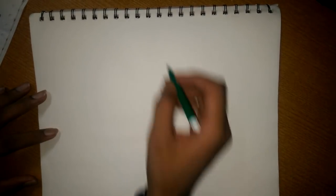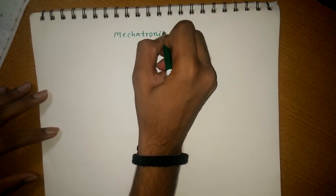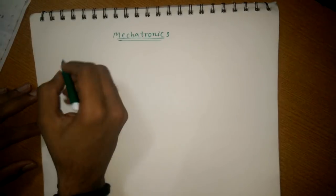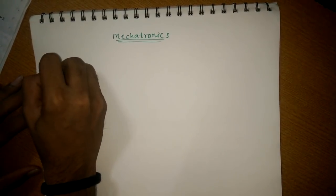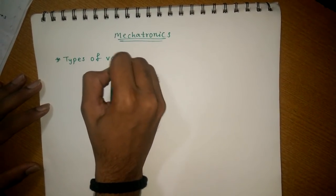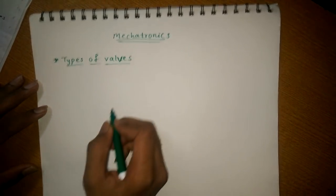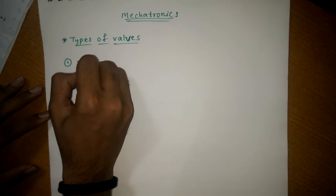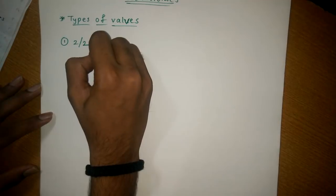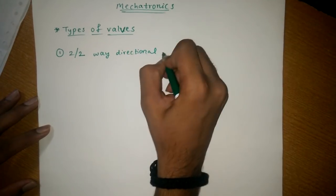Hello guys, this is Shortcut to Pass EMU and we are putting a video on mechatronics — the basic circuit diagram. First we should know the types of valves. The first is the 2/2-way directional control valve.